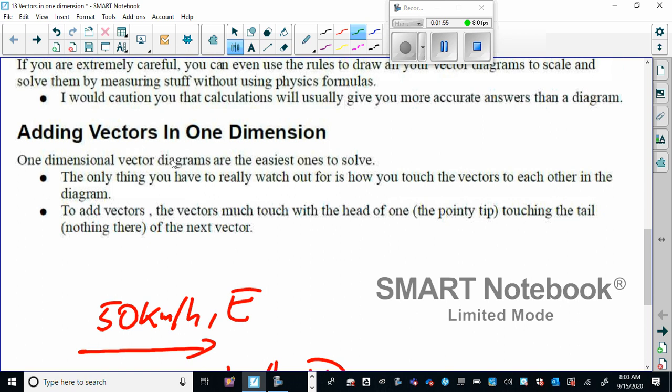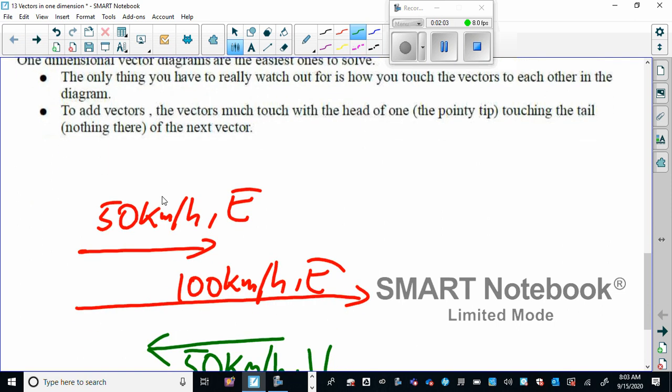Okay, so adding vectors in one dimension. The rule is you place the vectors tip to tail, and here is the tip and there is the tail. So you place the vectors tip to tail.